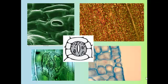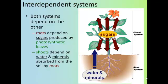The roots and shoots are interdependent systems — both depend on each other. The roots need the sugars made by the leaves that are carried to them by the shoots, and the shoots need the water and minerals that are brought by the roots.